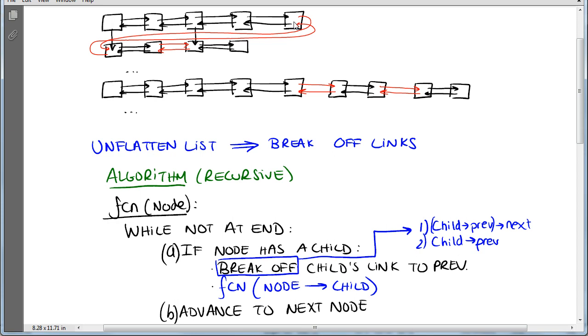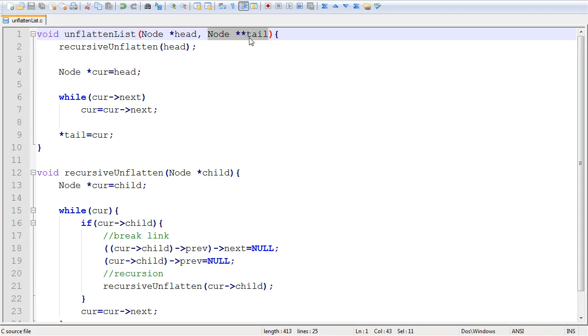We need to modify the tail pointer because in the previous video, it moved from the last element on the first level to the very last element of the entire multilevel data structure. Now we want to bring it back. This code modifies the tail pointer - it's very easy, just sweeping over the first level, reaching the end, and modifying the tail pointer like we did in the previous function.